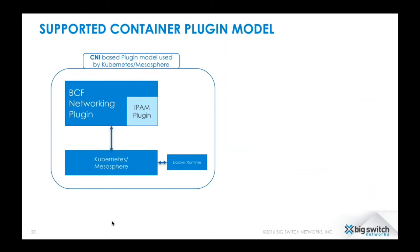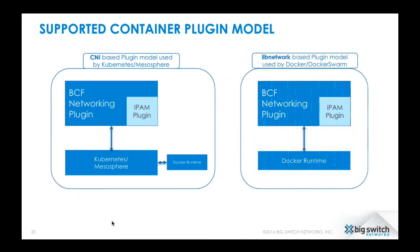Our solution supports the following container plugin models today. The first plugin implements the CNI specifications. The CNI-based plugin model is used by Kubernetes and Mesosphere. The orchestrator talks to the Docker runtime to spawn a specific container, then directly invokes the CNI plugin. The CNI plugin takes care of the IPAM requirements of the newly spawned container as well as plumbs the container into the fabric. The second plugin we have implemented is based on libnetwork, used by Docker and Docker Swarm. Here, the Docker runtime directly invokes the plugin when orchestrating the container itself, again providing IPAM and plumbing it into the fabric.